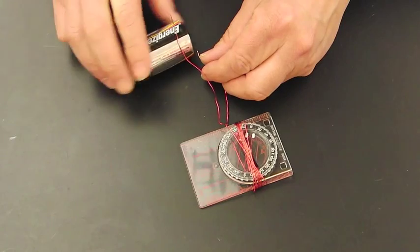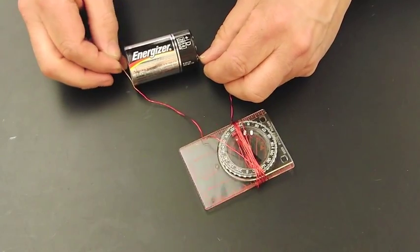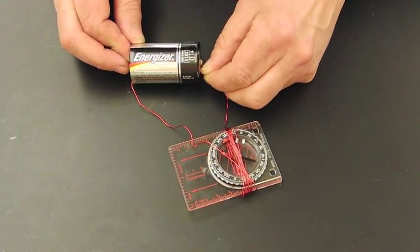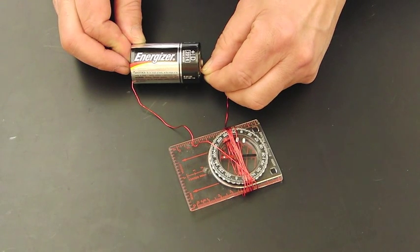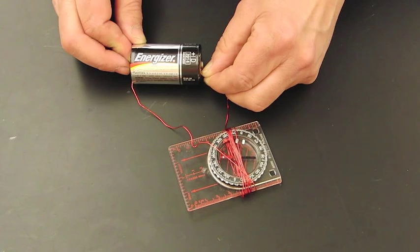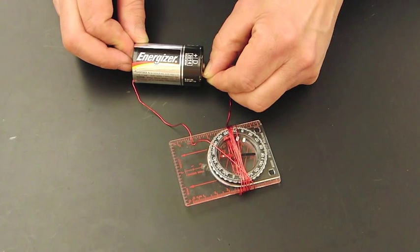And if I were to turn the battery around, once again we see the needle move, but in this case it has swung 180 degrees so that we now have the needle facing in the opposite direction. But the point is it is actually perpendicular to that coil of wire.